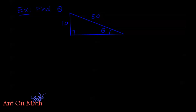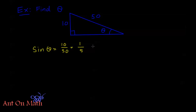Let's say we have an example where we're asked to find theta. Using SOHCAHTOA, notice that I'm given information about the opposite and the hypotenuse. I could use that information to find the adjacent side, but why create more work? I already have a function that uses opposite and hypotenuse. So sine of theta equals opposite over hypotenuse, which is 10 over 50, or 1/5. Then by the definition of our inverse trig functions, sine inverse of 1/5 is equal to theta.